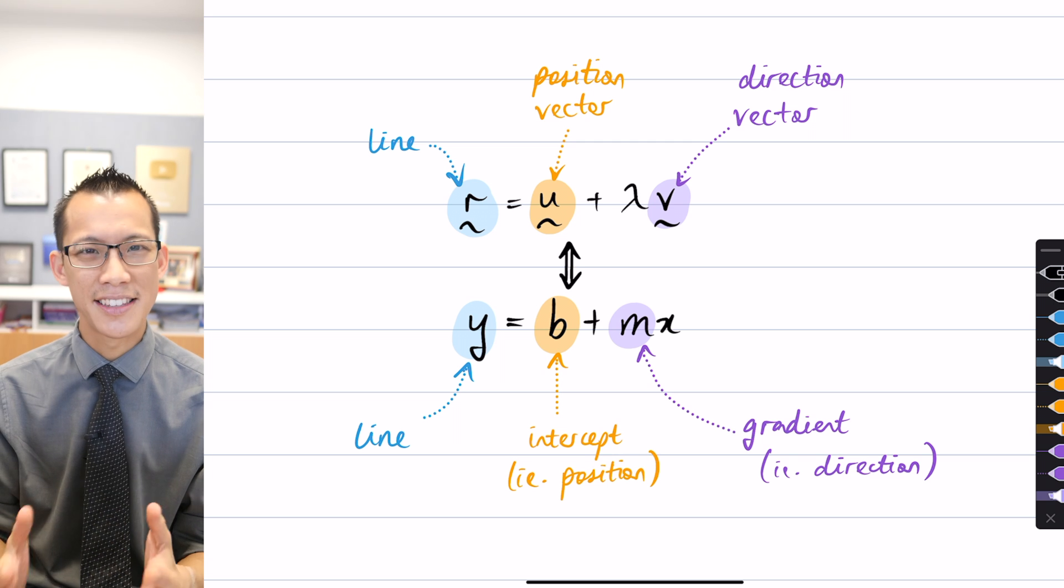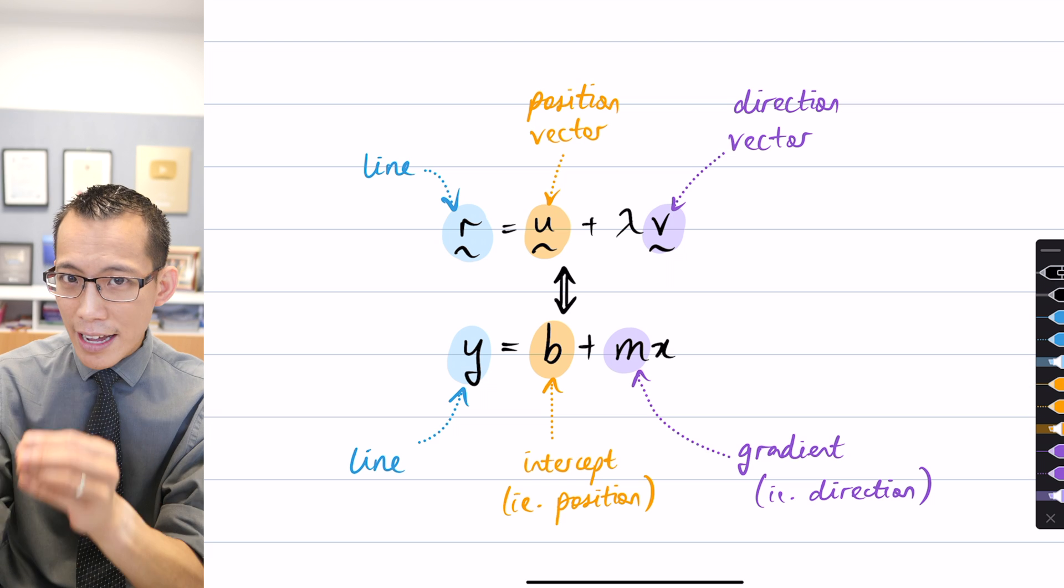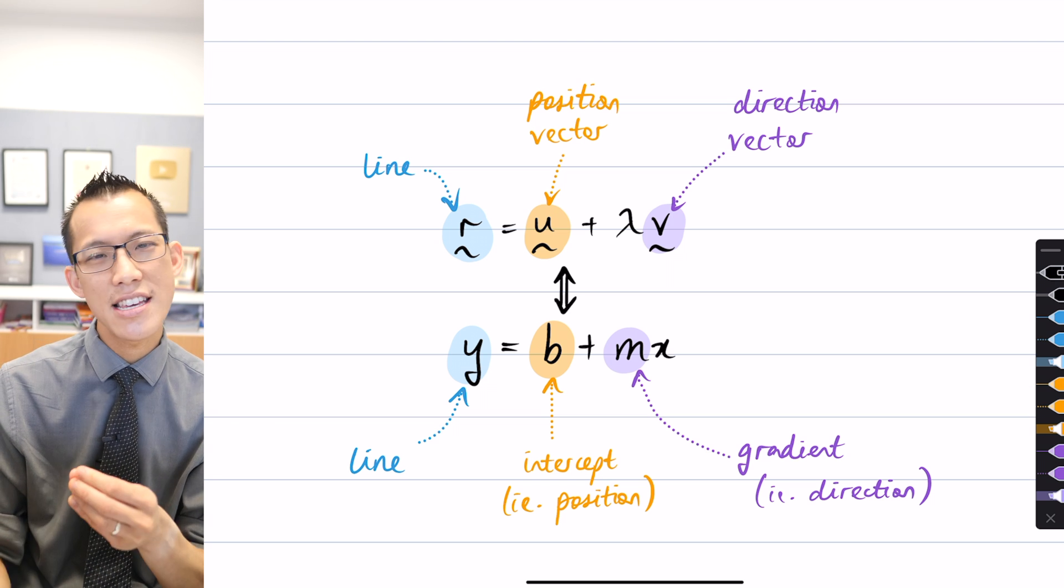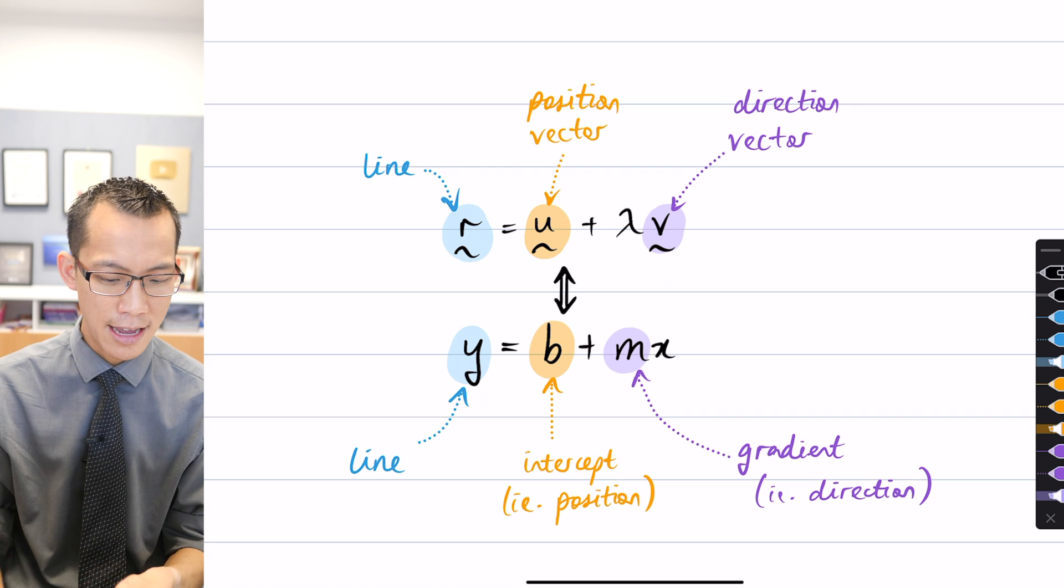Then we realized that if we used vectors in our equation, that was actually a sneaky shortcut. Every vector like u and v in this equation up here disguises multiple equations.